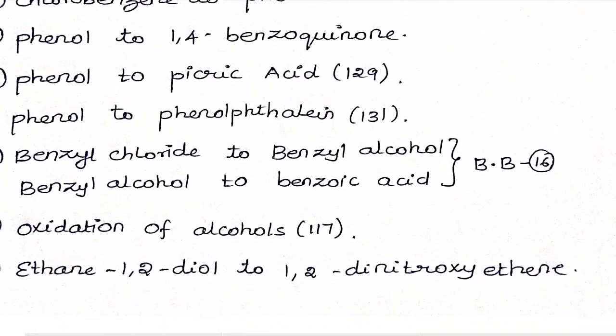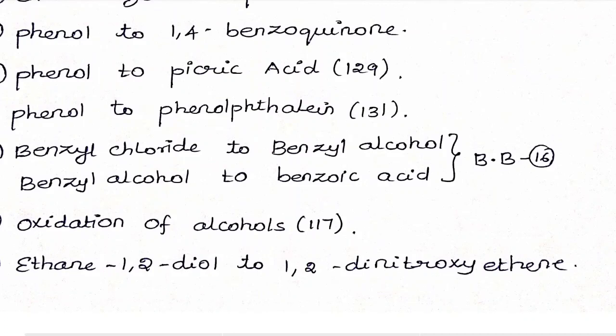The tenth conversion is benzoyl chloride to benzyl alcohol, and benzyl alcohol to benzoic acid — these are important to note. The twelfth conversion covers oxidation of alcohol, with all conversions having high exam chances on page 117. The thirteenth one is ethane-1,2-diol to 1,2-dinitroxy ethene.